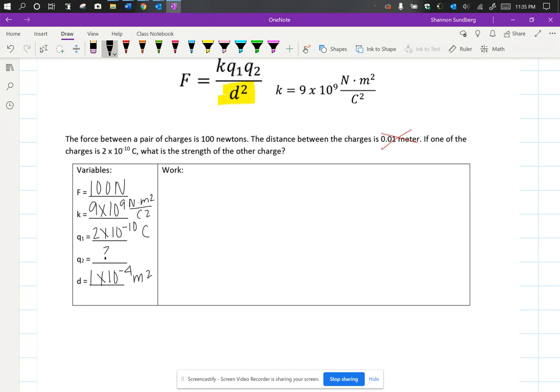Okay, so now all we have to do is plug these into our formula to solve. So force is 100 newtons, equals my K value, which is 9 times 10 to the 9th. Times my first charge, my Q1, which is 2 times 10 to the negative 10th.